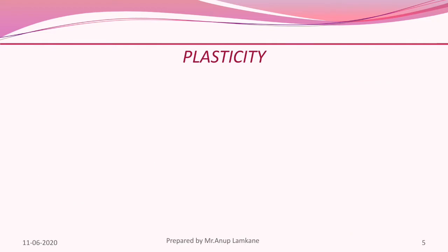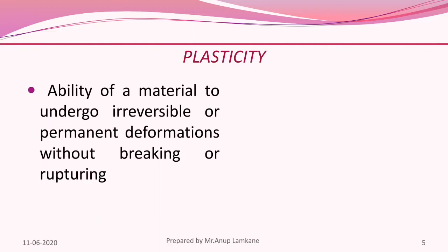The next property is plasticity — the ability of a material to undergo irreversible or permanent deformation without breaking or rupturing. This property is used in various processes such as forging, shaping, rolling, and forming.